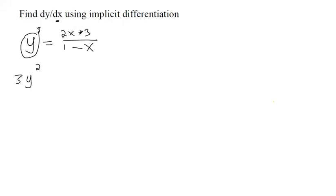That's not something that's explicitly defined. We don't have y equals something. We have y to the 3rd equals something. So we don't know what the derivative of this term is. So by the chain rule, we have to multiply this by y prime.